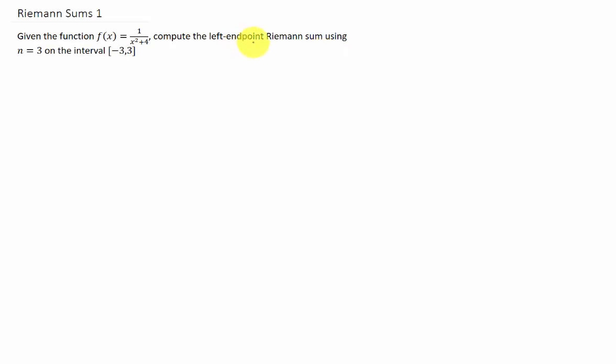We're going to find a left endpoint Riemann sum for this function using n equals 3 on the interval negative 3 to 3. To give you an idea of what this means, I'm going to give you a basic sketch.